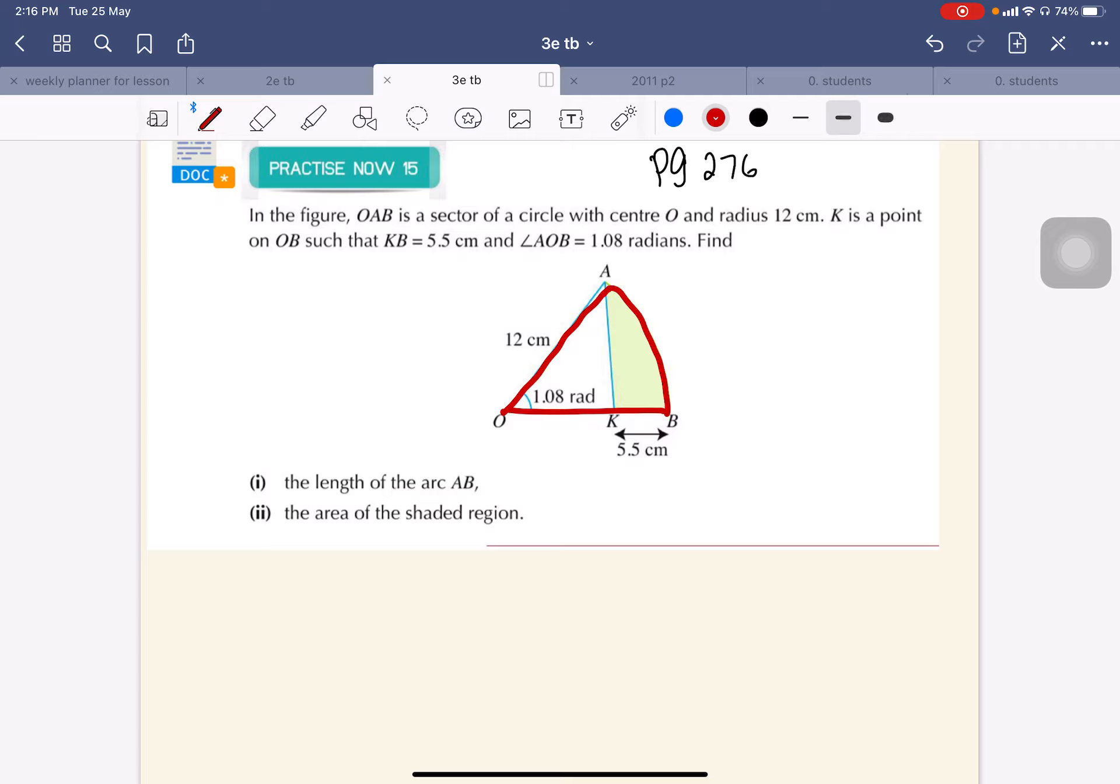In other words, I can say that OA equals OB equals radius. So this whole thing is 12.